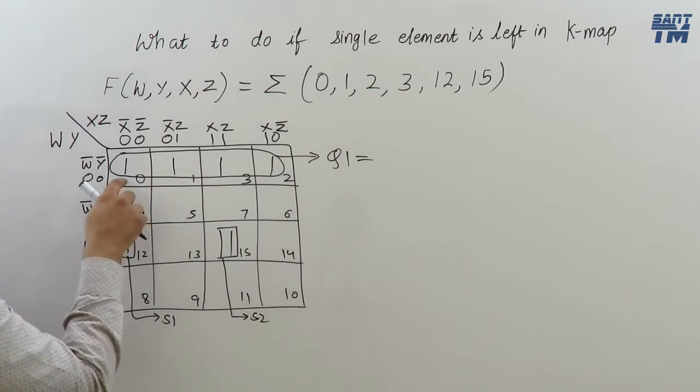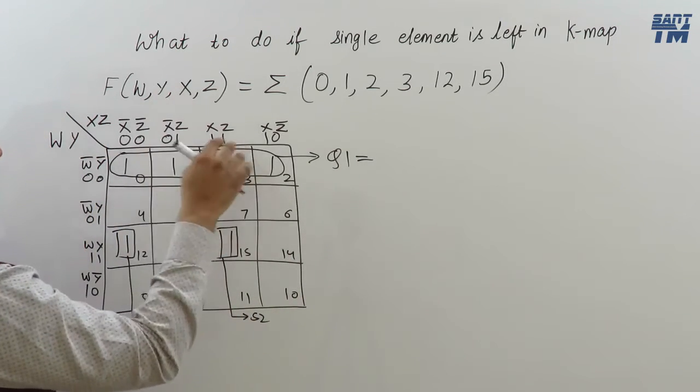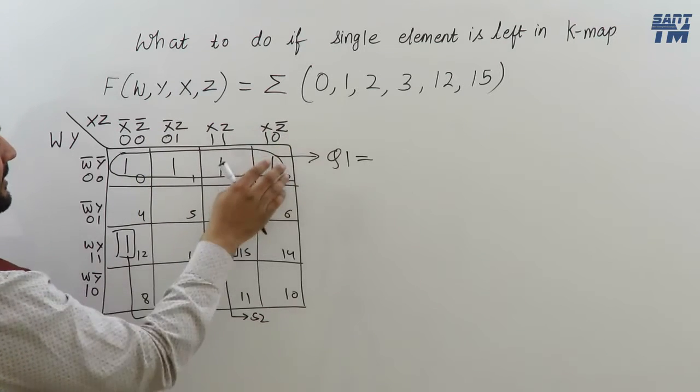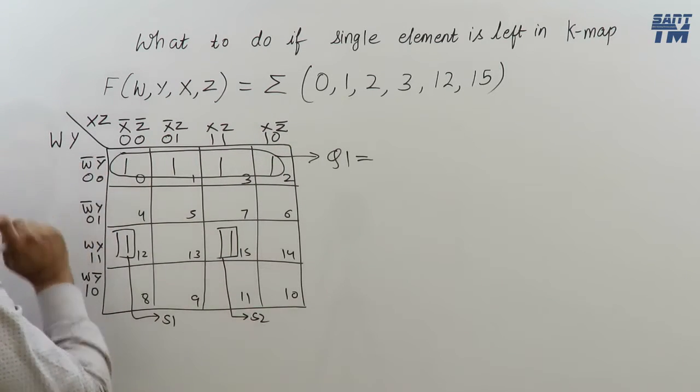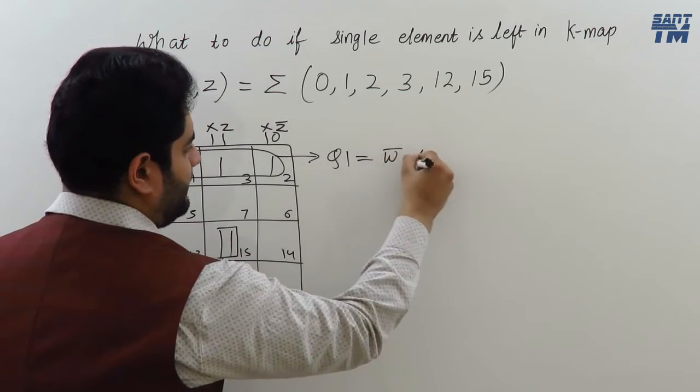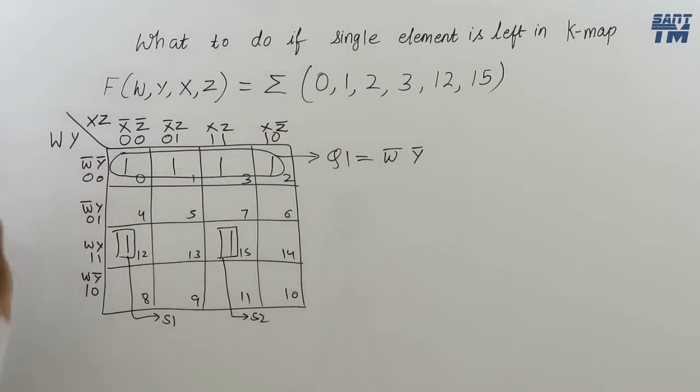Quad 1, it is occupying all the 4 columns. So, X bar, Z bar will cancel X, Z and X bar, Z will cancel X, Z bar. But full row it is occupying. So, W bar, Y bar will come. W bar, Y bar as Y is here.